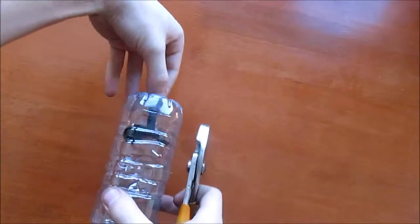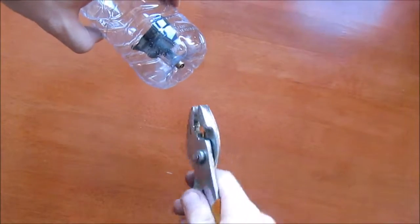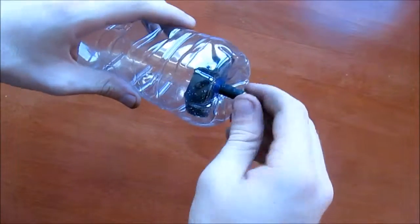Next, you're going to want to take a pair of pliers and pull the valve through the bottle. Your bottle should look something like this now.